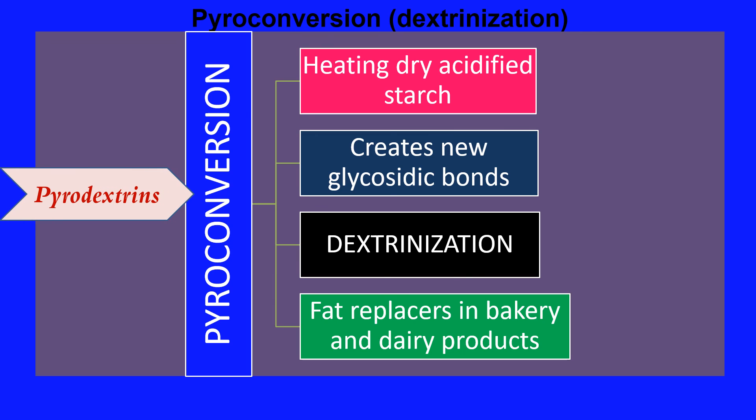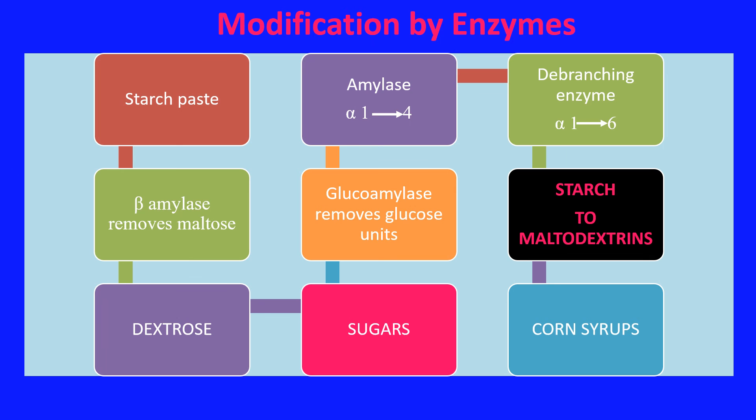Finally, starch modification by enzymes involves treating starch paste with enzymes such as amylase. Beta-amylase removes maltose to produce dextrose. Alpha-amylase targets alpha-1,4 linkages, and glucoamylase removes glucose units to produce sugars. The debranching enzyme targets alpha-1,6 linkages and converts starch to maltodextrins and corn syrups.